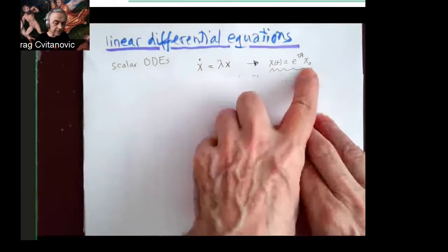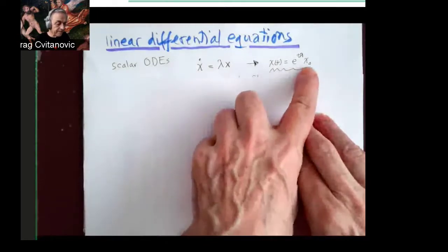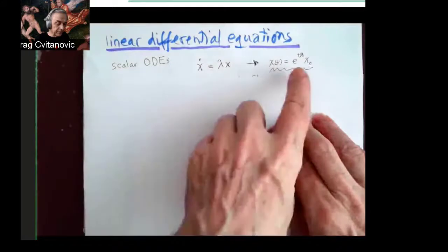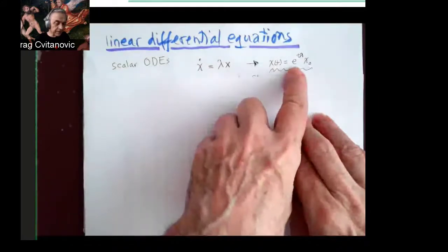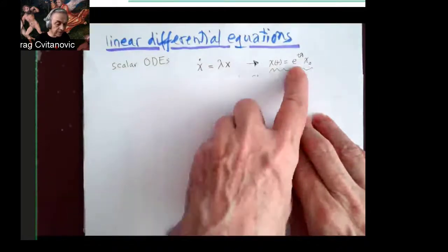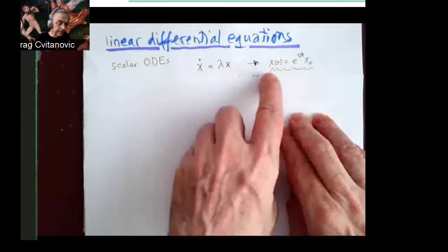...you are at position, at value, which you call X0, then the solution just multiplies this by this exponential, and that's the value of X at time T.